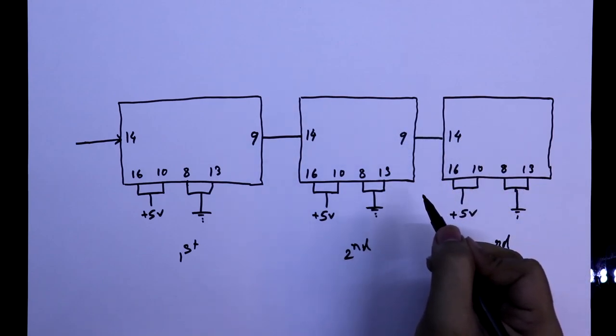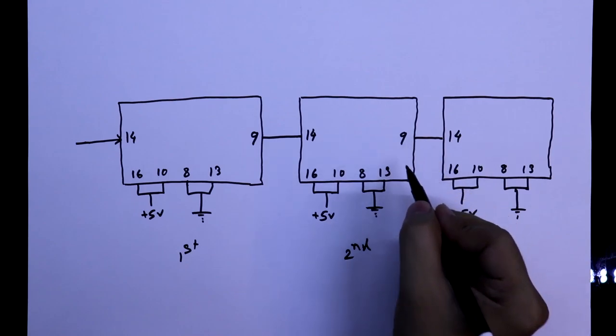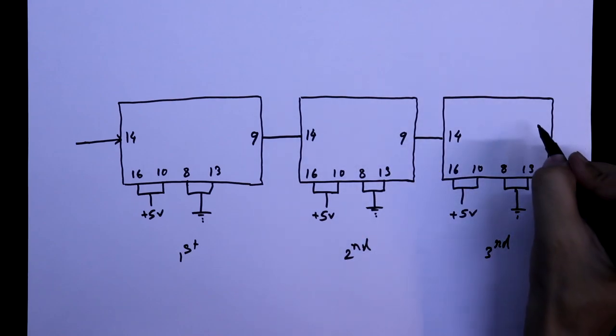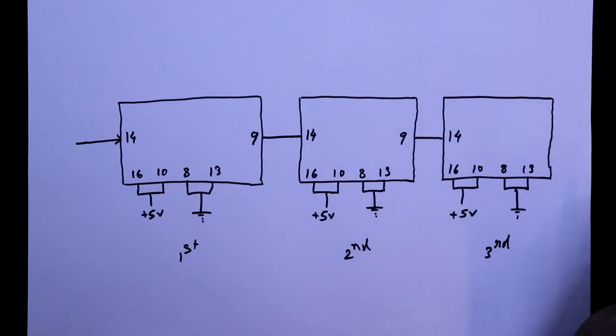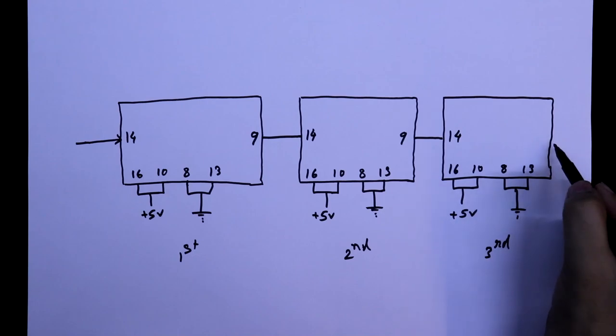Like this, we have to connect it. If you connect another IC, then you have to use pin number 9 of this IC. So, as we are using 3 IC, we don't have to use pin number 9 of third IC.